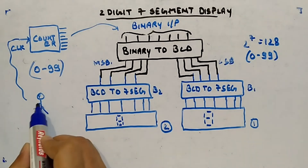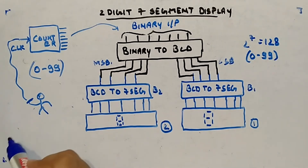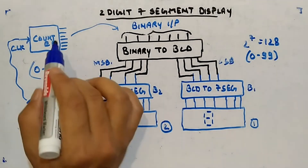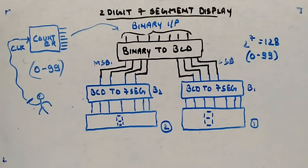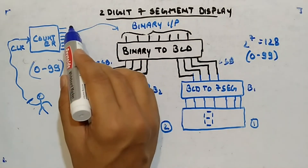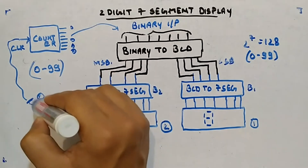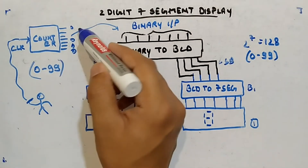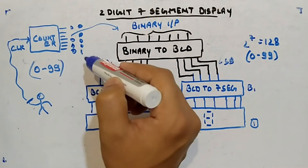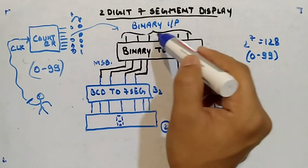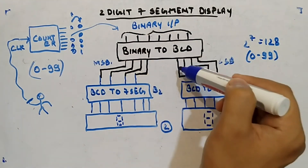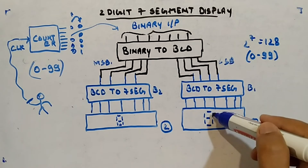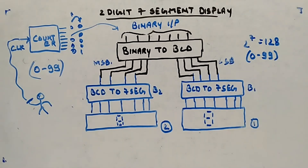You can think of the counter controlled by someone pressing a remote button. When the button is pressed, the clock pulse is given and the next sequence comes. For example, starting at all zeros, once the button is pressed, the clock triggers and the output becomes 0000001 — one count. This will show 0 on one display and 1 on the other.